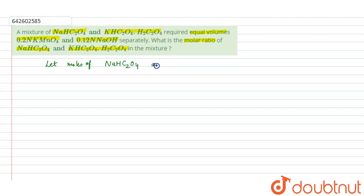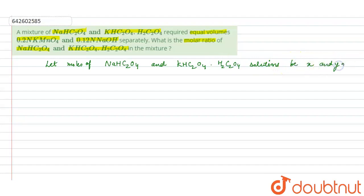We have to find the ratio x/y, which is asked in the question. Now, when KMnO₄ reacts with NHC₂O₄ and KHC₂O₄·H₂C₂O₄, it will titrate these oxalic acid solutions. Let us first see the reactions involved.